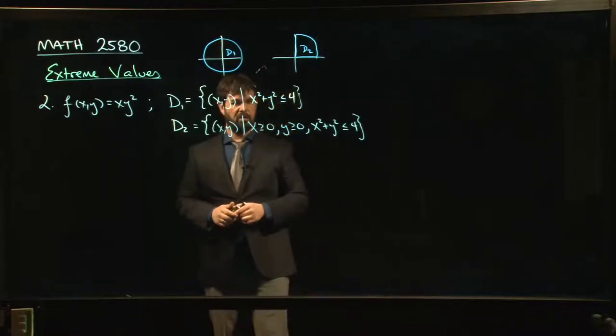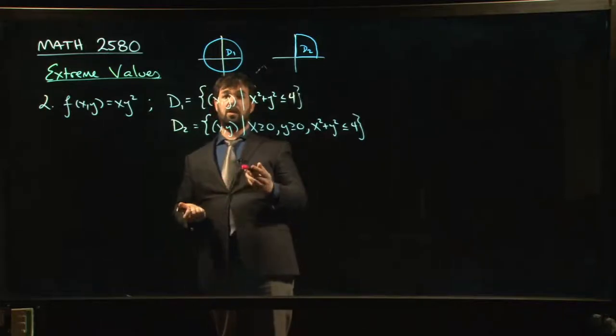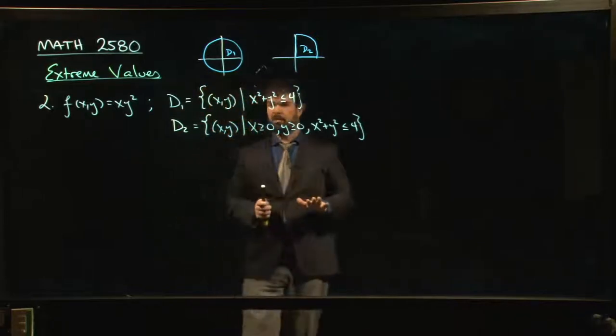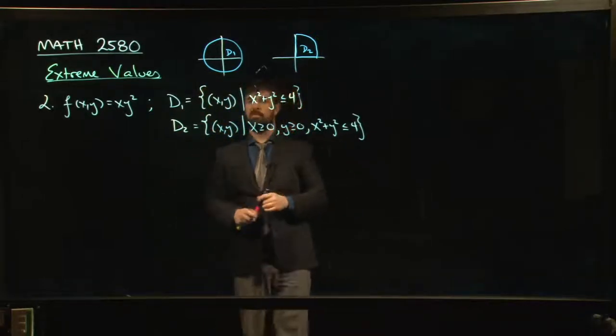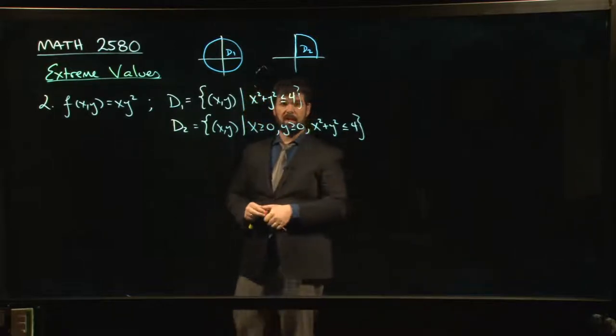The other thing that's interesting here is now the boundary of our region is no longer a straight line. It's a curve, in fact it's a circle. So the boundary is a circle. The easiest way to deal with boundaries that are given by curves, in most cases, is to see if you can parameterize those curves. So we'll see that in a second.